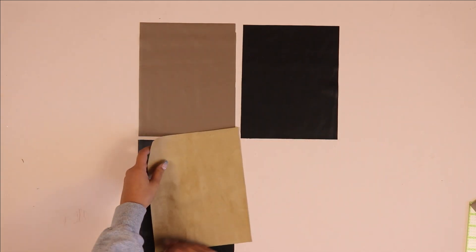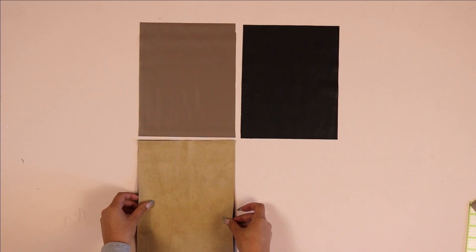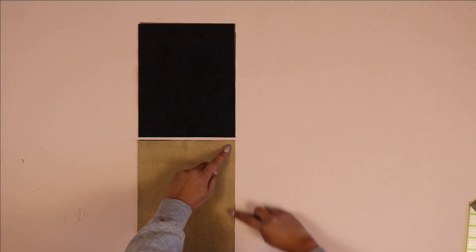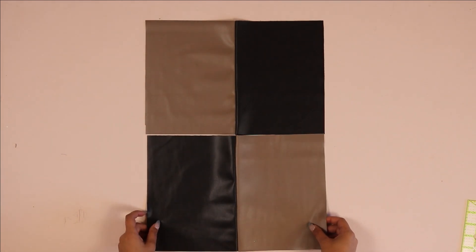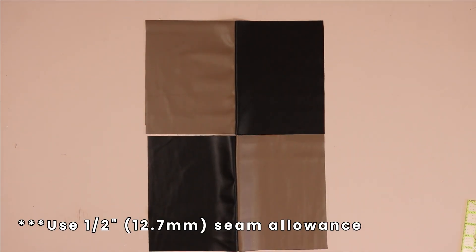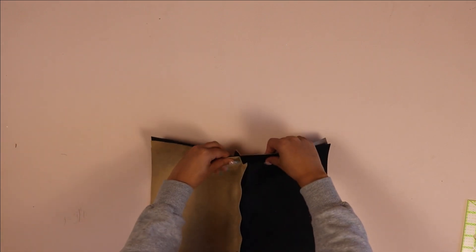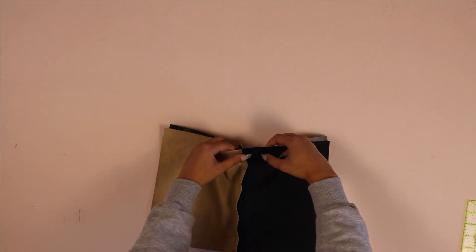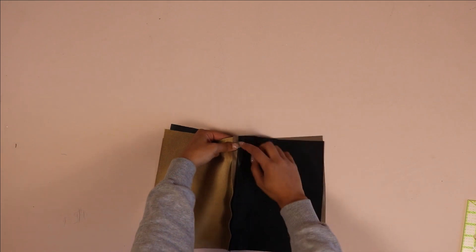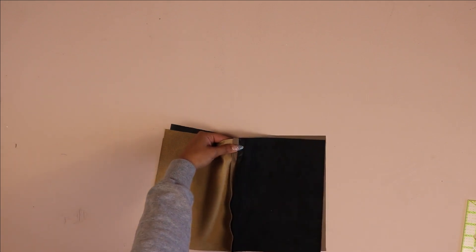Now to sew the body of the bag, you're going to have two of each color on each side. Make sure they're positioned like this to create that checkered design. Then place the rectangles right on top of each other, right sides together, and sew along the long edge. If you're working with canvas, make sure you press your seams open. Now we're going to take our two panels and place them right sides together, then sew along the center seam of the bag.